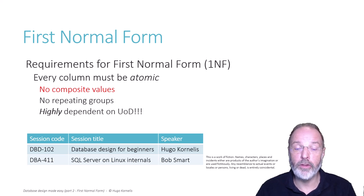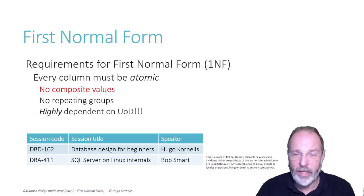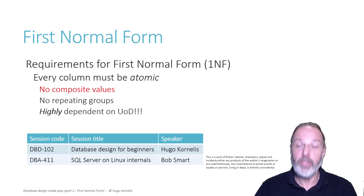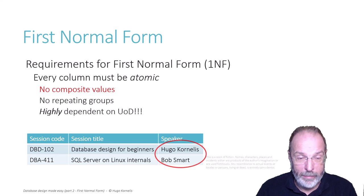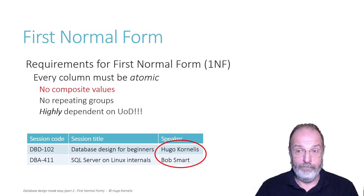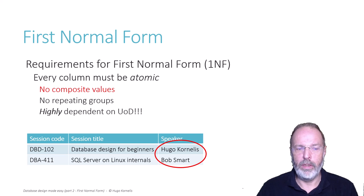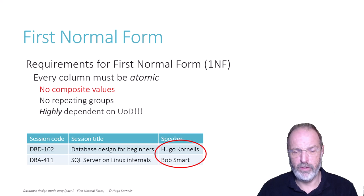Any resemblance to actual events or persons, living or dead, is entirely coincidental. So my lawyer is happy again. Okay, we have those names — Hugo Cornelis, Bob Smart. Are those atomic values or composite values?